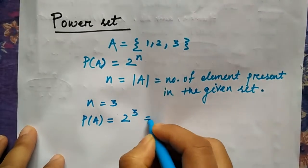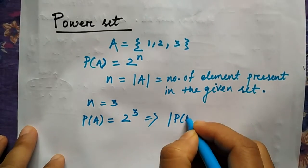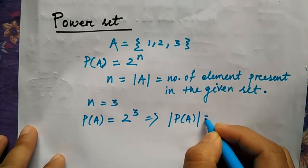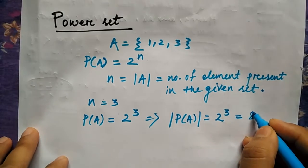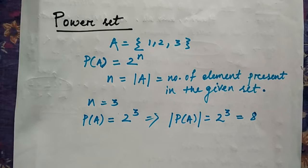So power of A will be 2 to the power 3, or you can say that the number of elements in the power of A will be 2 to the power 3 equals 8.